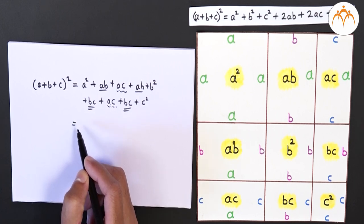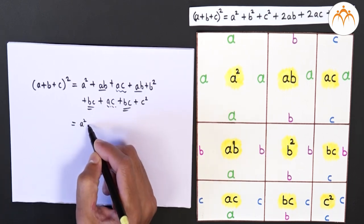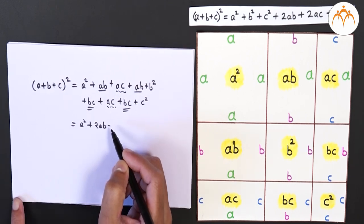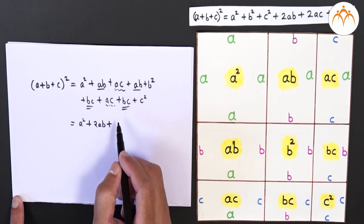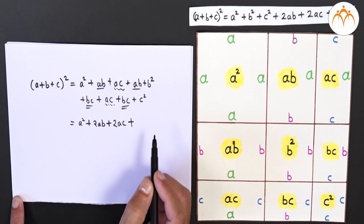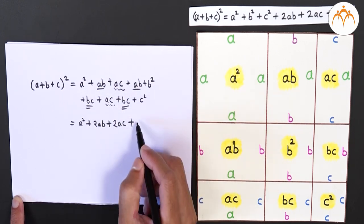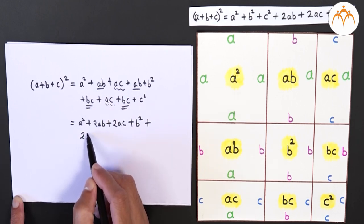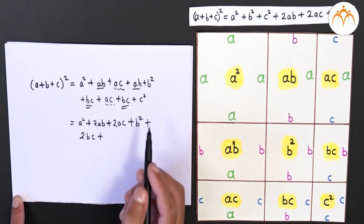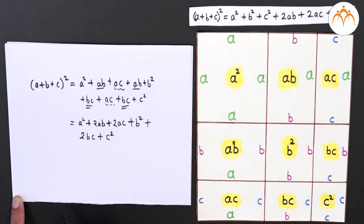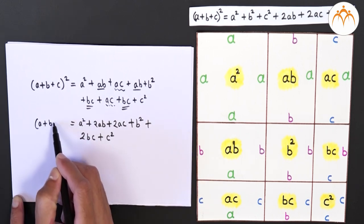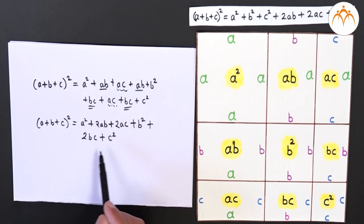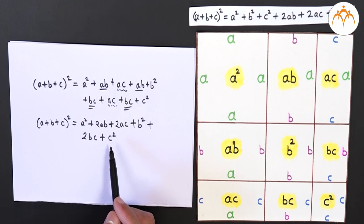If we collect the like terms together, we can write it as a² + 2ab + 2ac + b² + 2bc + c². So we obtain the expansion formula for (a+b+c)². The formula is very much similar to (a+b)², is it not?